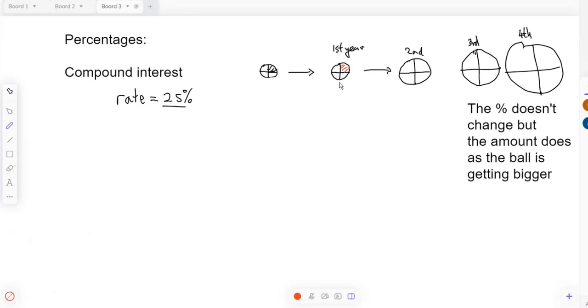Finding a quarter, but isn't that quarter getting bigger? And that's all I want you to see. As the years go on, you're still getting 25%, but the amount is definitely getting bigger. The percentage doesn't change, but the amount does as the ball is getting bigger.